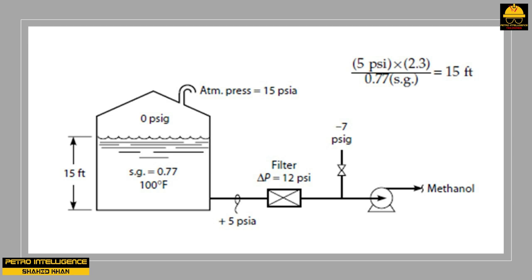The physical pressure at the pump suction, 8 PSIA, minus the vapor pressure, 3 PSIA, equals 5 PSIA. To convert to feet: 5 PSI × 2.3 ÷ 0.77 specific gravity = 15 feet of available NPSH. This demonstrates that pumps can have substantial available NPSH even with sub-atmospheric suction pressure, as long as the liquid is subcooled — which is common for liquids stored in ordinary atmospheric pressure tanks, which are almost always well below their boiling point.